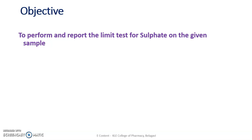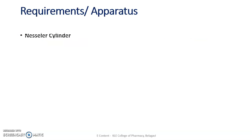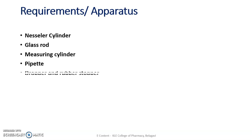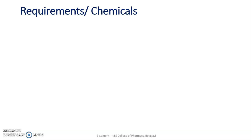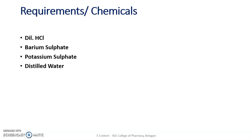The objective of our experiment is to perform and report the limit test for sulphate on the given sample. The requirements are: Nessler's cylinder, glass rod, measuring cylinder, pipette, dropper, rubber stopper, and a Nessler's cylinder rack. The chemicals required are: dilute HCl (10%), barium sulphate reagent, potassium sulphate, and distilled water.